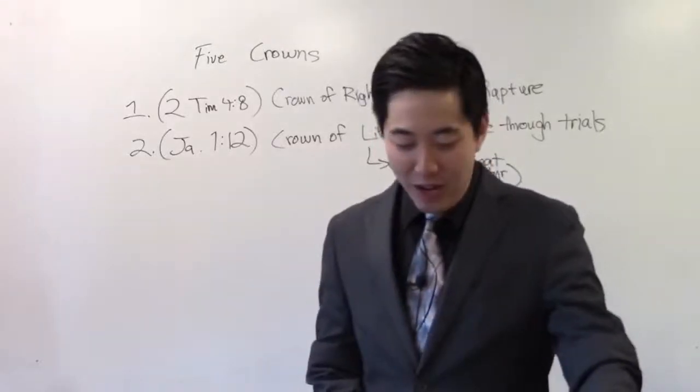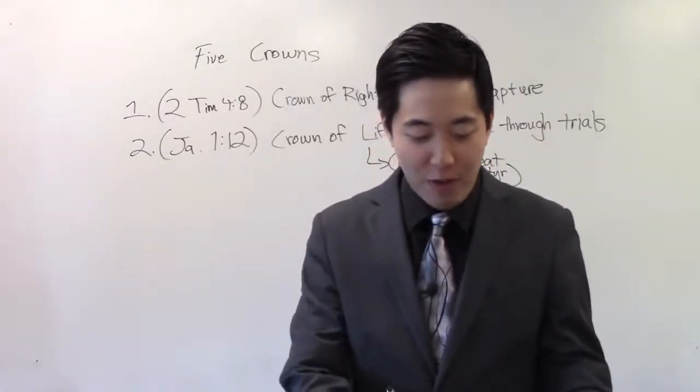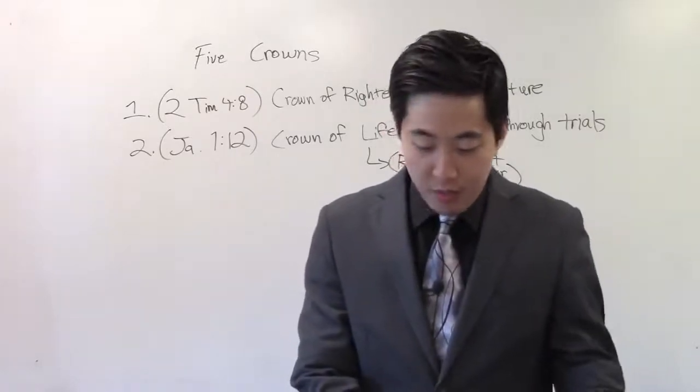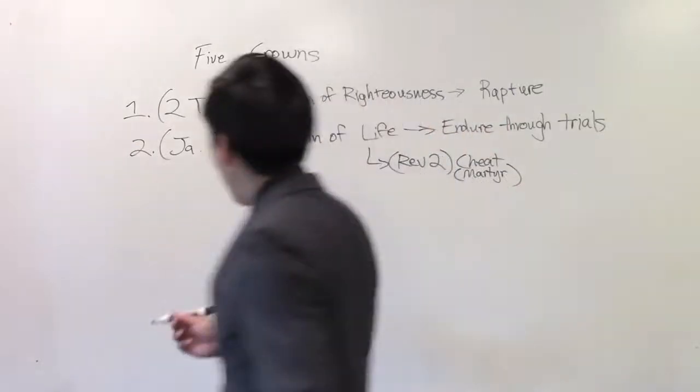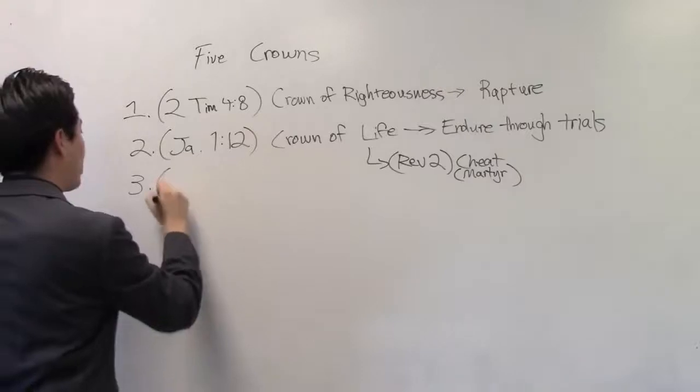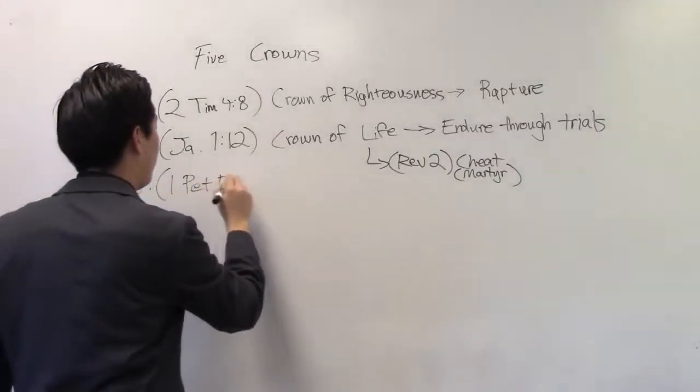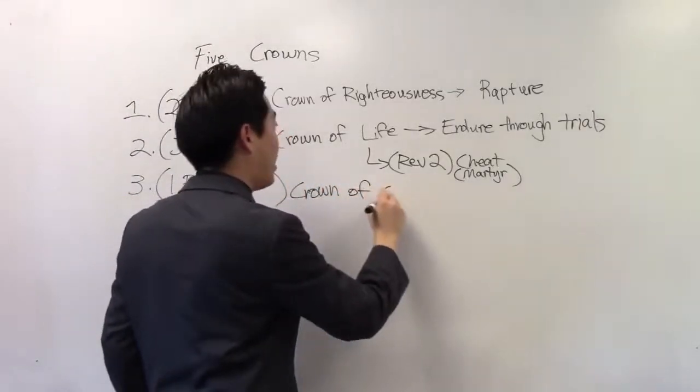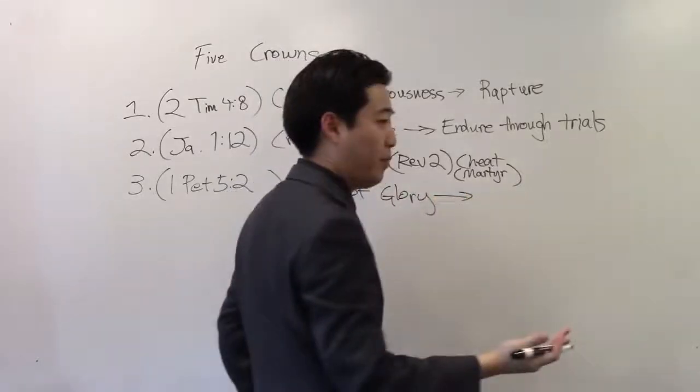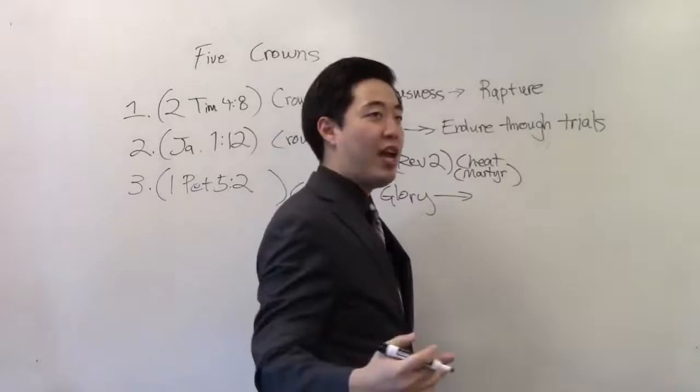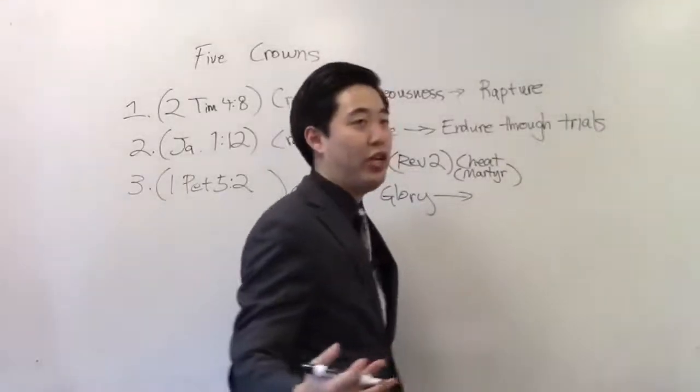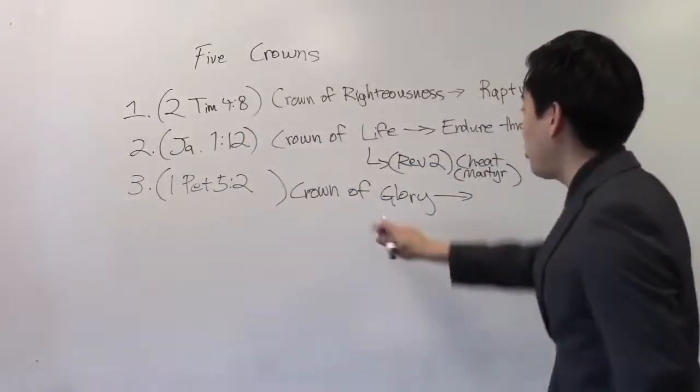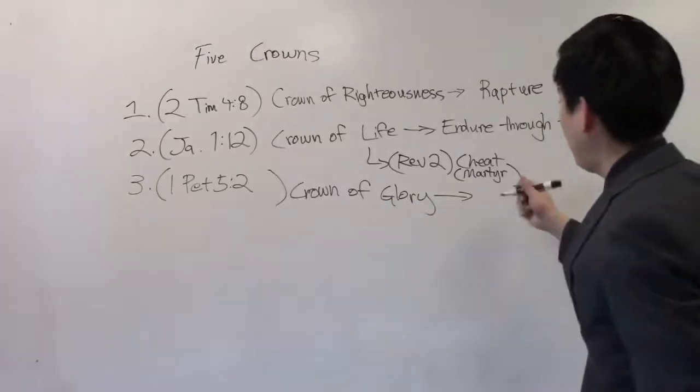Let's look at 1 Peter chapter 5 verse 2, 1 Peter 5 verse 2. The next crown is the crown of glory, crown of glory. How do you get this crown of glory? In 1 Peter 5 and 2, it's through feeding the flock, feeding the flock. So you properly feed God's flock. So the people who came here to Bible teaching today, if they are not fed properly through my preaching and teaching, then I'm not doing my job. And as a pastor, I'm going to miss this out. Now, how many pastors do you think are going to miss this one out? Yes, a lot.